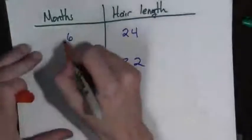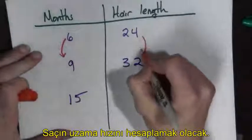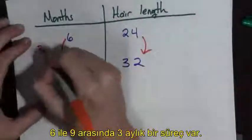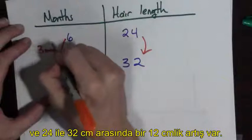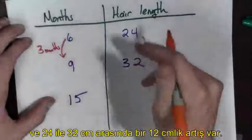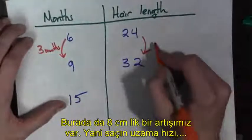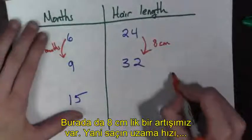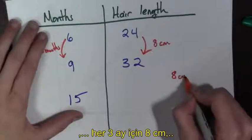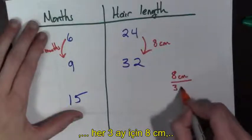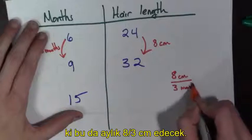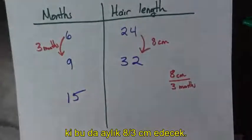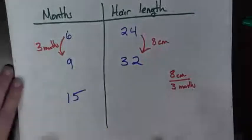Maybe the first thing we should do is figure out what the rate is that the hair is growing. Between six and nine months, three months occur. And between 24 and 32 centimeters, we have eight centimeters here. So, the hair is growing at a rate of eight centimeters per every three months, which is the same as eight over three centimeters per month.